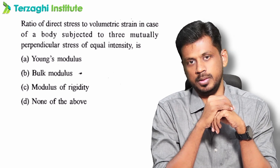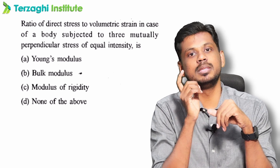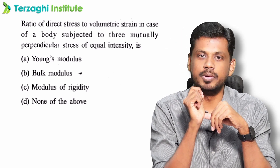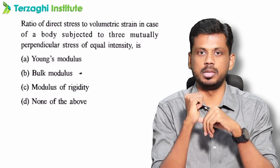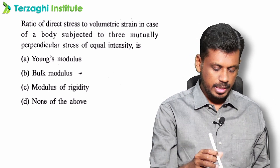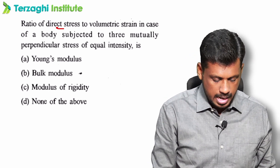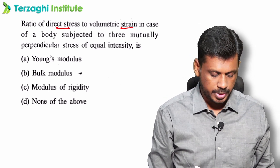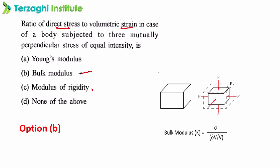Bulk modulus is defined as direct stress divided by volumetric strain. So the answer to 'what is the ratio of direct stress to volumetric strain?' is Bulk modulus.